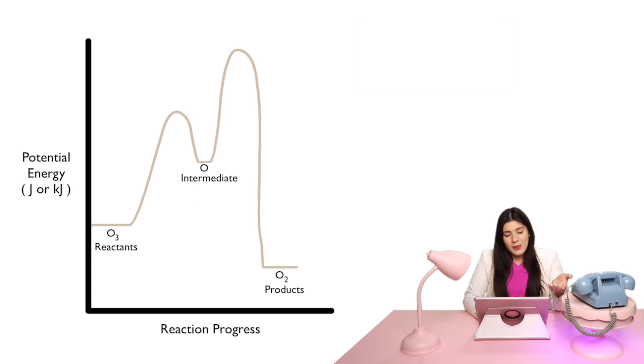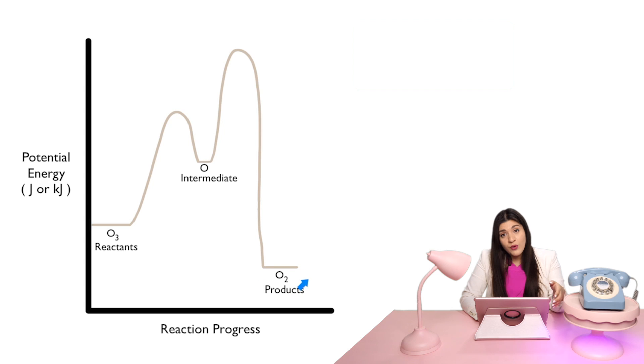What this is talking about is that we don't just instantly go from O3 to then magically producing this product. There has to be some sort of in-between phase. That's what our intermediate is describing. Something else to notice with this graph is how high our energy levels are for our reactants and our products. And we'll notice that the reactants energy is higher than the products.